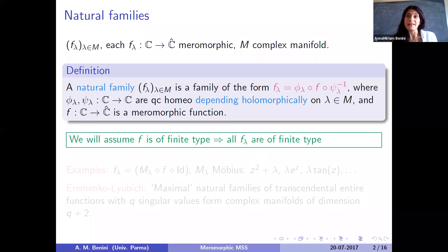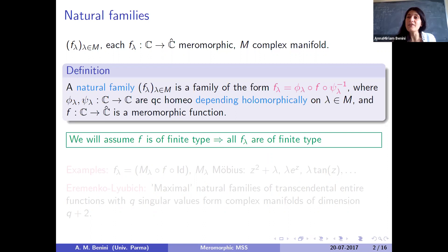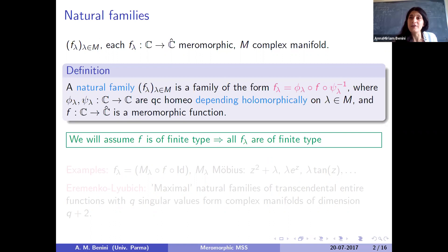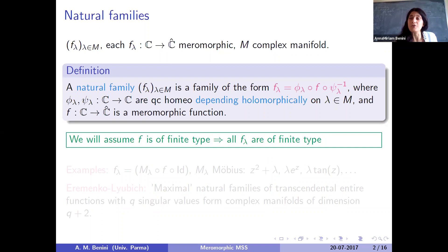The local covering structure is preserved by this type of composition, called quasi-conformal equivalence. By assuming that F is of finite type, this implies that all F lambda are of finite type, meaning finitely many singular values. There are two reasons we need finite type. One is that we need singular values to be isolated, which is only ensured by having finitely many of them. The other is that the final steps of the proofs of the Mañé-Sad-Sullivan theorem require a finite number of perturbations to prescribe the behavior of all singular values.